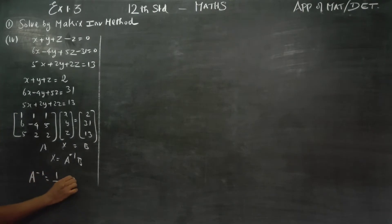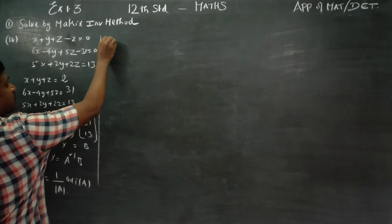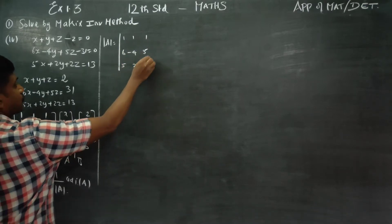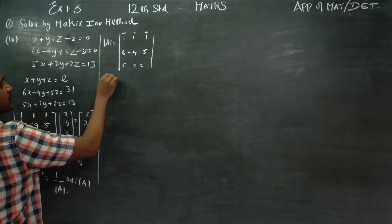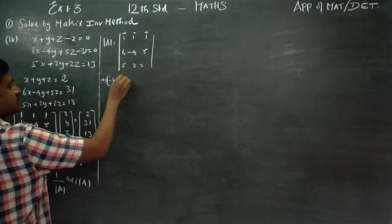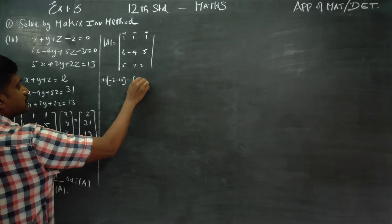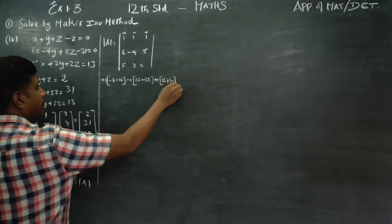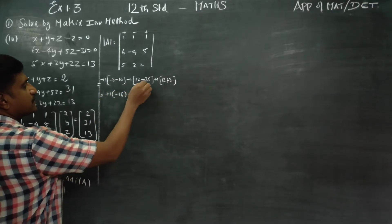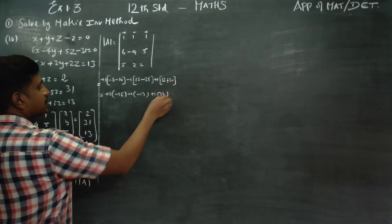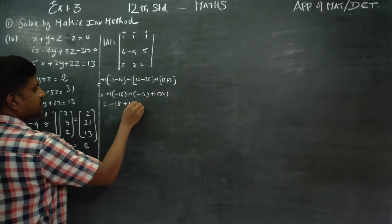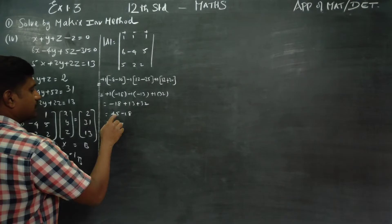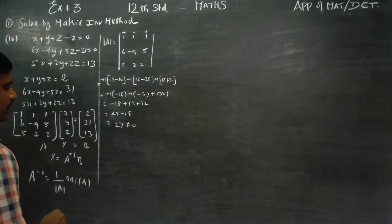The inverse is 1 by determinant A into adjoint A. First I will find the determinant. Determinant of A using the matrix 1, 1, 1 / 6, minus 4, 5 / 5, 2, 2 — expanding along the first row with signs plus, minus, plus — gives: 1 into (minus 8 minus 10) minus 1 into (12 minus 25) plus 1 into (12 plus 20). That is minus 18 plus 13 plus 32, which equals 27. Determinant A equals 27, which is not equal to 0.